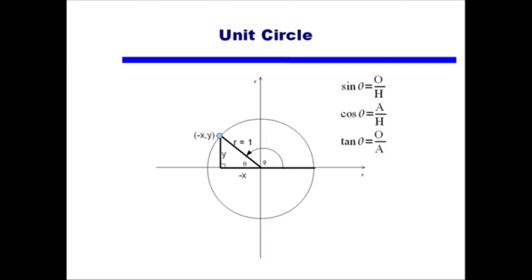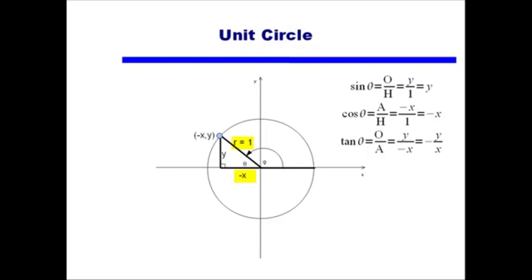I can still look at sine of theta as opposite over hypotenuse — that's still y over 1, or y. Cosine of theta is adjacent over hypotenuse, but now the adjacent side is negative x, so it's negative x over 1, or negative x. Tangent is opposite over adjacent, which is positive y divided by negative x, giving negative y over x. So in quadrant 2, sine is always positive, but cosine and tangent are always negative.